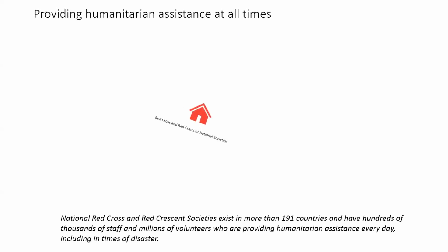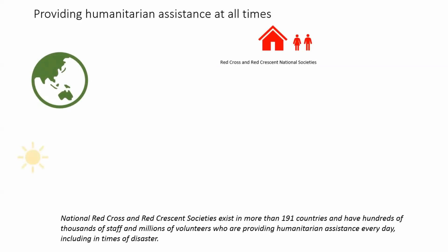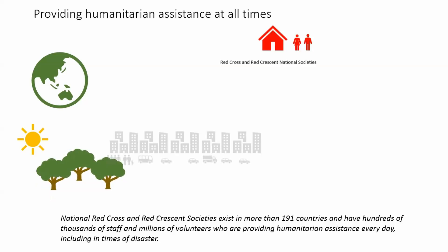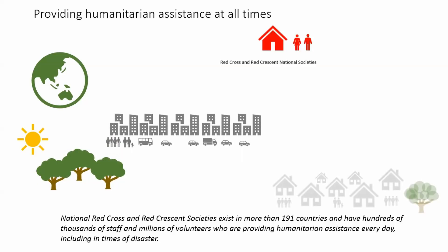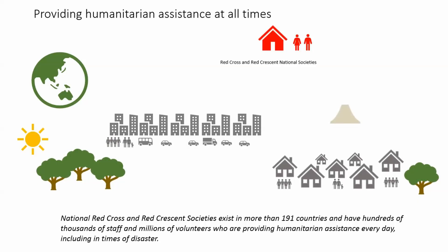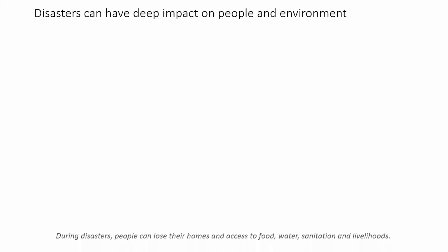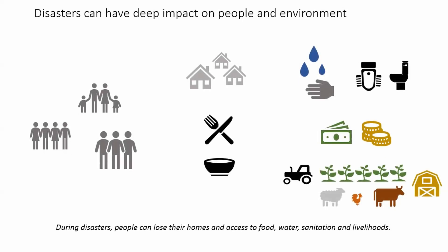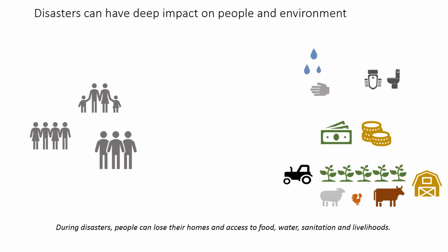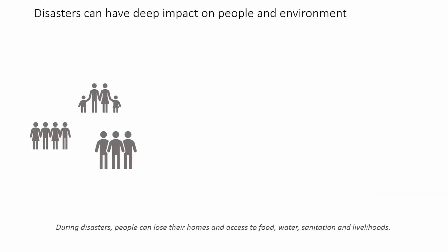National Red Cross and Red Crescent societies exist in more than 191 countries and have hundreds of thousands of staff and millions of volunteers who are providing humanitarian assistance every day, including in times of disasters. During disasters, people can lose their homes and access to food, water, sanitation and livelihood.